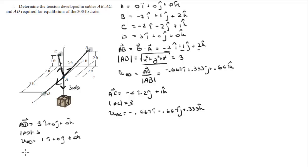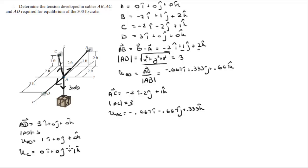The last vector — the one going straight down for the crate — has unit vector equal to 0i + 0j - 1k, because it's just going straight down.